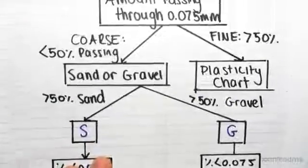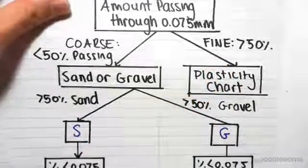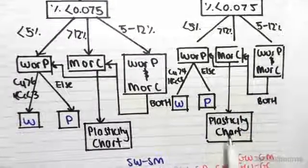And the reason I'm doing the fine soil first is because we come to this thing called the Plasticity Chart, which could come up later for a coarse soil depending on which branch you go down. So you can see it's down here as well.